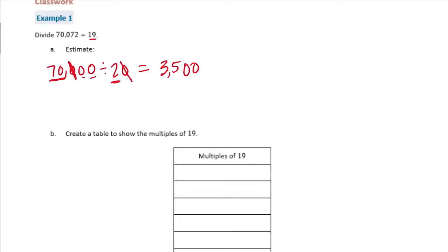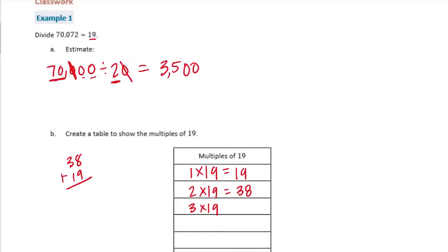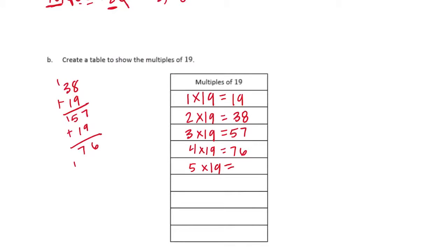B. Create a table to show the multiples of 19. So let's start with 1. 1 times 19 is 19. 2 times 19 is 38. 3 times 19 — let's just do 38 plus 19, we can keep adding on 19. So 8 plus 9 is 17, carry the 1, is 57. 4 times 19 — add another 19: 7 plus 9 is 16, carry the 1, so we get 76. 5 times 19 plus another 19 is 95.